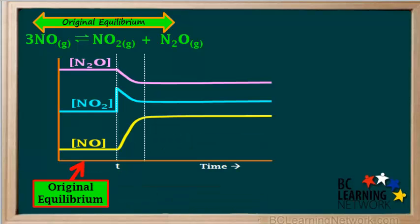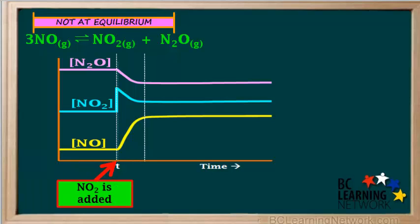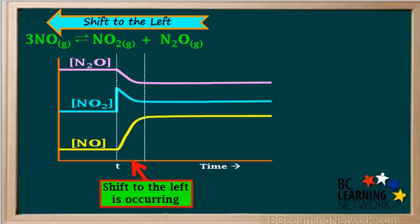Now we can summarize what is taking place during each section of the graph. The section to the left of time T represents the original equilibrium, where concentrations are constant and the lines are flat. At time T, NO₂ is added to the original equilibrium mixture, so its concentration rapidly increases, and the system is no longer at equilibrium — the original equilibrium has been disturbed. The section between the two dotted lines is where the shift to the left is occurring: the concentrations of NO₂ and N₂O are going down, while the concentration of NO is going up. This is what a shift to the left means.